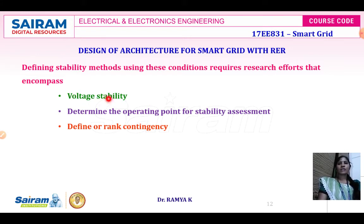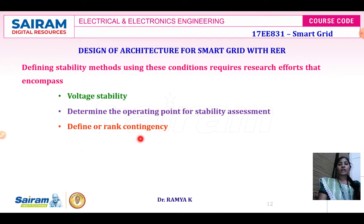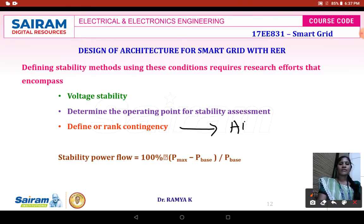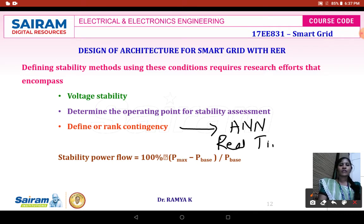In voltage stability, we will be defining the probability distribution function to model the resources, and based on that model, we will have some choice for which we need to make a selection. What type of methods we have to include? Whether we have to include an artificial neural network method, real-time environment measurement, or any other algorithm like PSO, ant colony algorithm, or dragonfly algorithm. We have to define the rank contingency for the power network. For defining this rank contingency, the first one is ANN — artificial neural network — then real-time measurement using ant colony algorithm, PSO algorithm, or dragonfly algorithm.